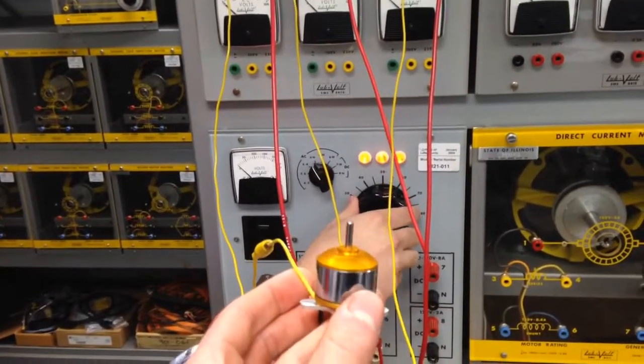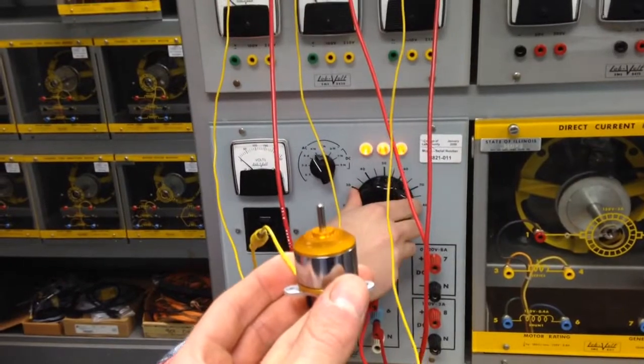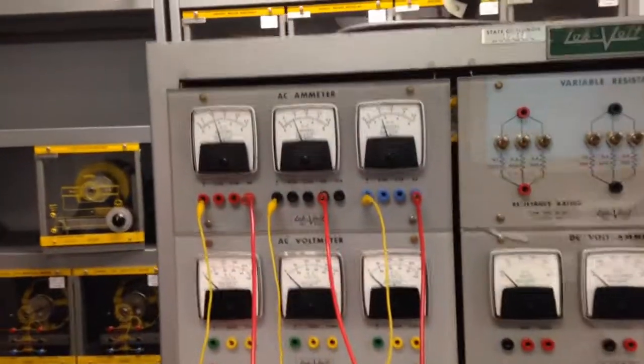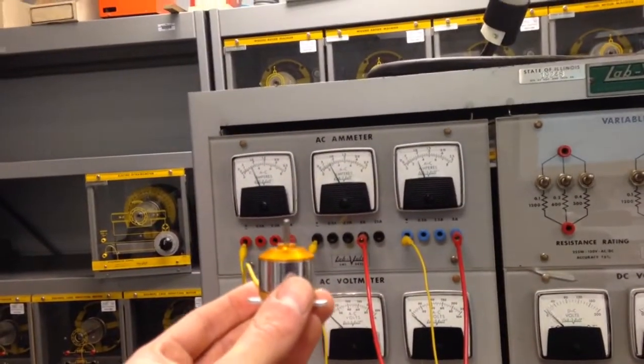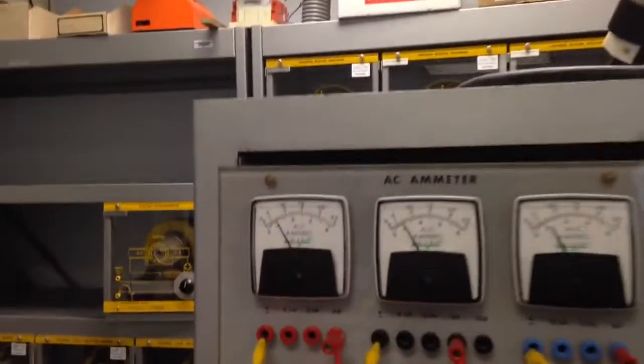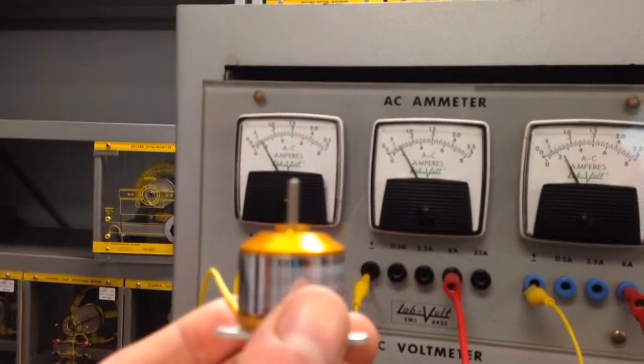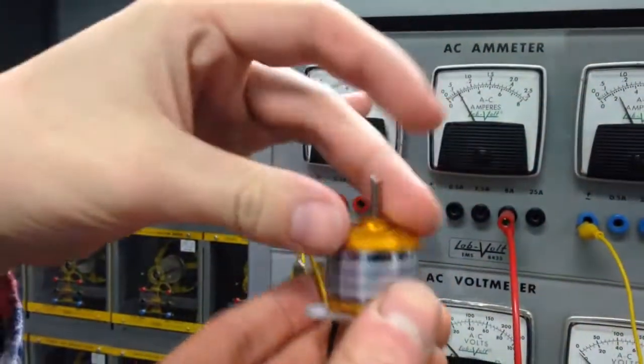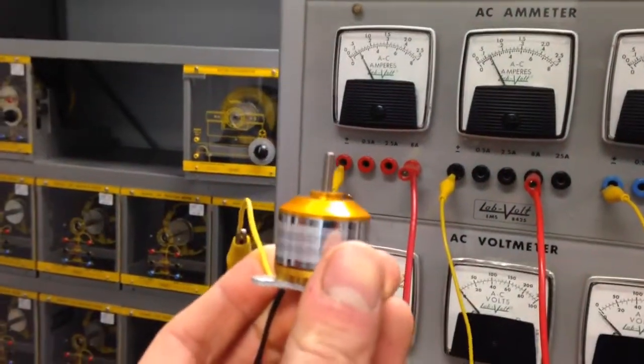That's the fastest we're going to get it to spin, but the more current you put through it, the more torque you're going to get. So let's turn down the current to a bare minimum right now. Now it's still going but it's got pretty much zero torque, so it's going to start cogging as soon as I even touch it.